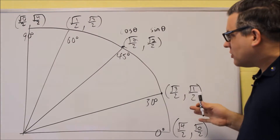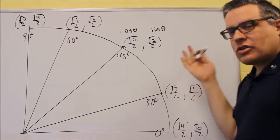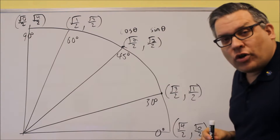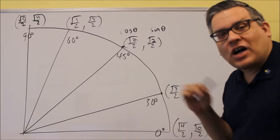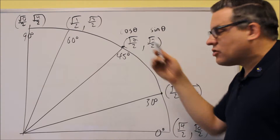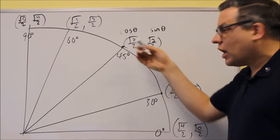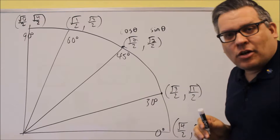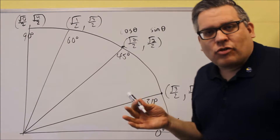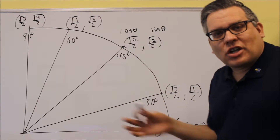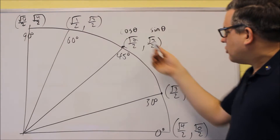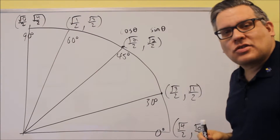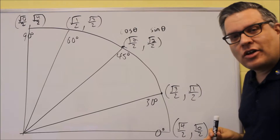Once you have this complete, we have all our values. Now suppose you wanted to find tangent of 45 degrees. Tangent equals the y value over the x value, and because these are coordinates from the unit circle, we have both values so we can just divide them. Or if you want secant, you just take the reciprocal of cosine. Cosine is the first coordinate and sine is the second coordinate, so you can get all these values directly.